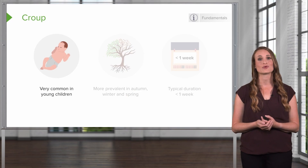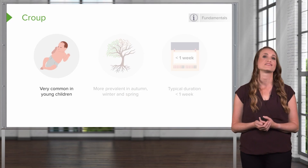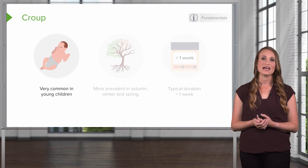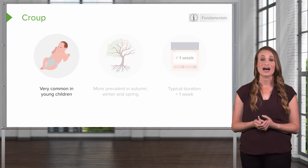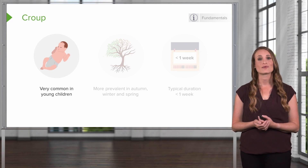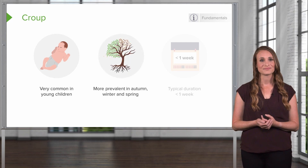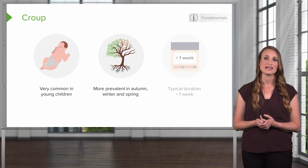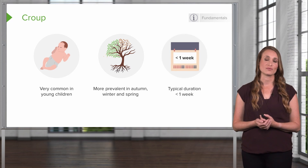Some children are more prone than others to develop croup symptoms when they get a viral upper respiratory infection, and most outgrow croup by the age of five when their airway becomes bigger. Croup is more prevalent in the autumn, winter, and spring, and typically lasts about one week.